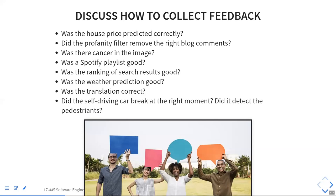We want to see how well we're predicting housing prices. If you made predictions on houses currently for sale, you can assume those houses will be sold reasonably soon. Once they sell, you have a production label to check against. You're not training on houses that haven't been sold yet, but you can observe what gets sold and see how close your predictions are.